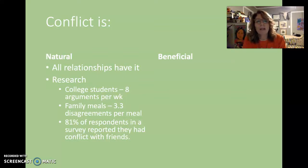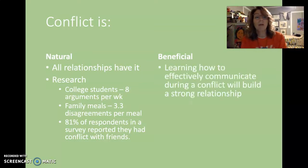Research shows that college students have about eight arguments per week. You think that's true? Maybe some of you do. Maybe some of you don't. Family meals, man, that's where our disagreements happen. A family meal is 3.3 disagreements per meal. So maybe we're not calling them conflict or disagreements, but they happen. It's normal. 81% of the respondents in this particular survey reported that they had conflict with friends. So normal. People have it all the time. Don't flip out about it.